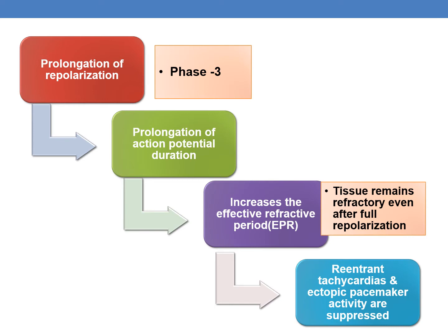The overall mechanism of action of Class 3 antiarrhythmic drugs is prolongation of the repolarization phase (Phase 3), which leads to prolongation of the action potential. This in turn increases the effective refractory period (ERP), meaning the tissue remains refractory even after it is fully repolarized. The increased ERP is the main effect by which reentrant tachycardias and ectopic pacemaker activity are suppressed.